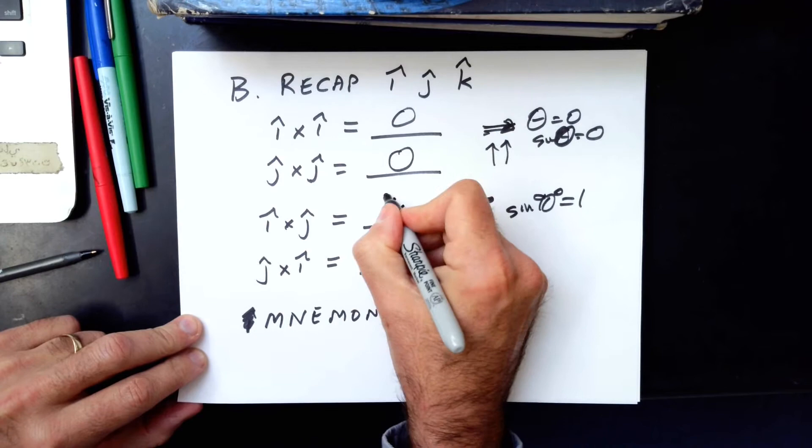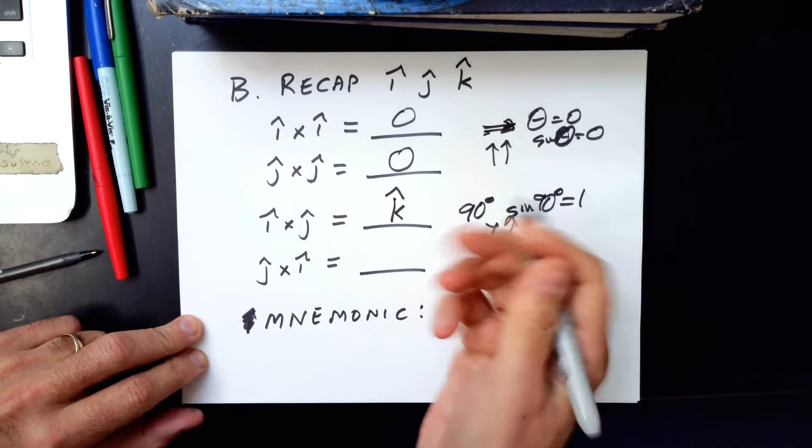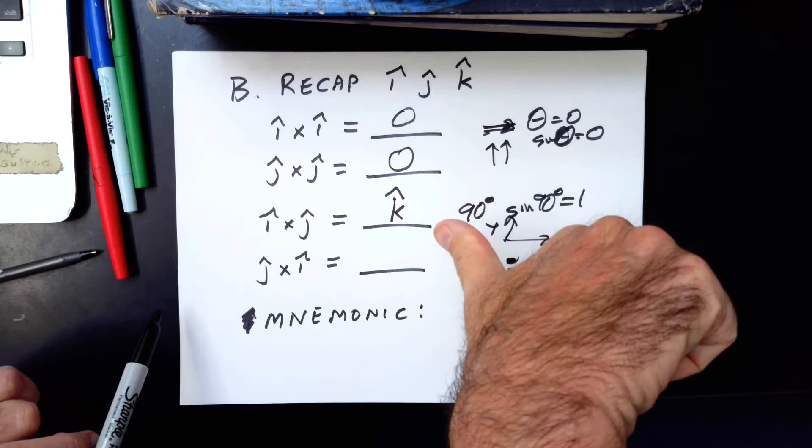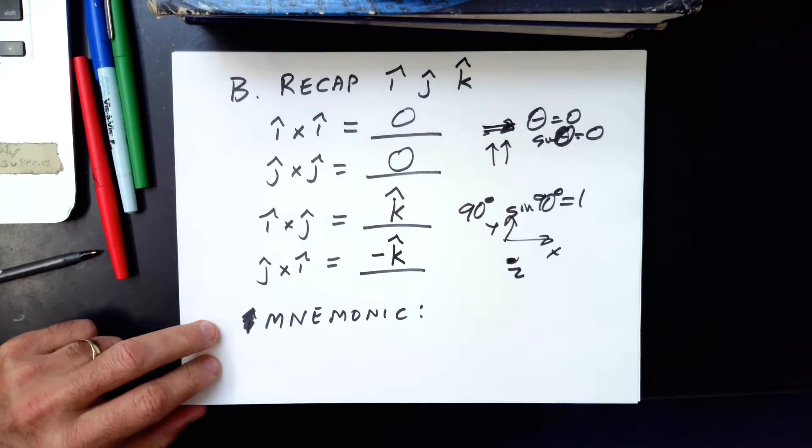This is X, this is Y, Z points at you. That's how they're defined. You're not allowed to just decide Z points the other way. If X goes right, Y goes up, Z comes at you. And then finally, if it's J direction cross I direction like that, look which way my thumb's pointing into the page, that's the negative K direction.